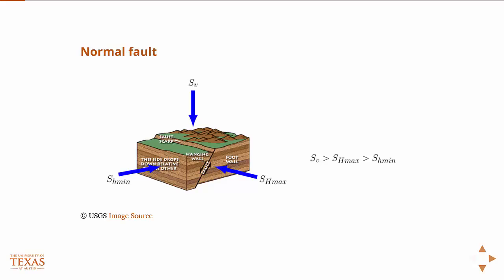So in this case, the vertical stress is greater than the two horizontal stresses to accommodate that motion. If the vertical stress, which remember stress multiplied by an area gives you force, so you can think of the vertical force as such to accommodate hanging wall motion in the same direction as gravity.